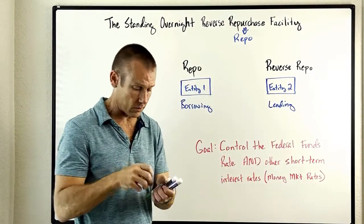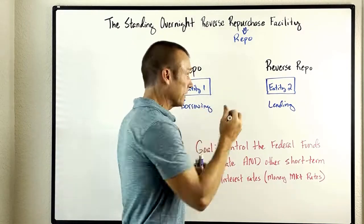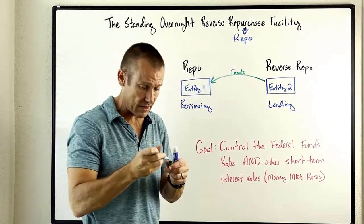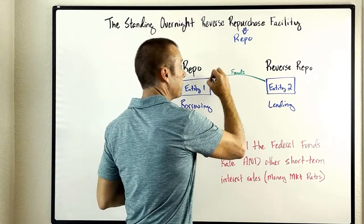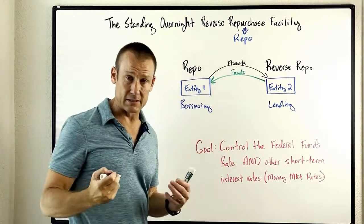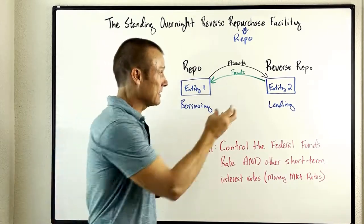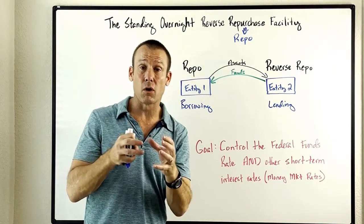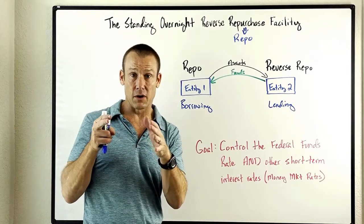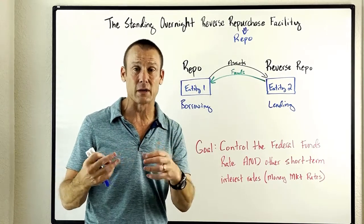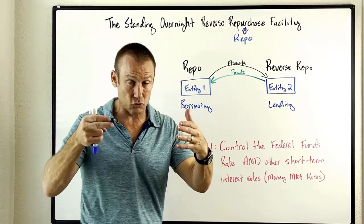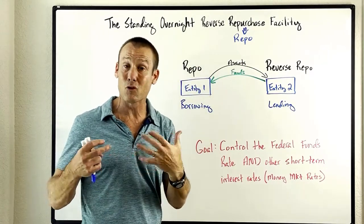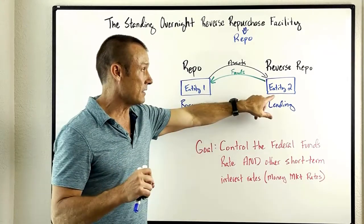How does this work? On day one, one entity borrows funds — think of that as cash. What this entity does is it places some assets with the other entity as collateral. Those assets are actually worth a little bit more than the loan itself, making it a collateralized and very secure form of borrowing and lending. Entity two has to sell these assets back — that's the repurchase agreement.